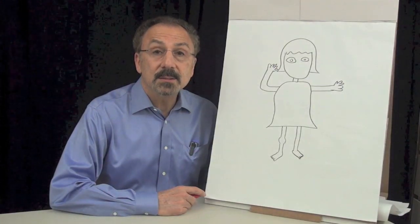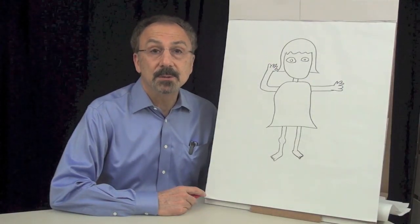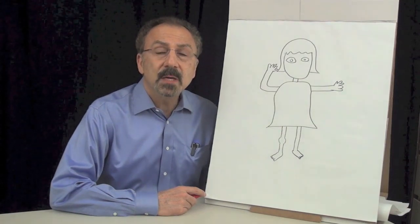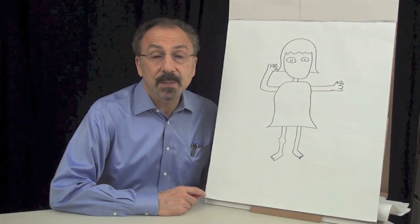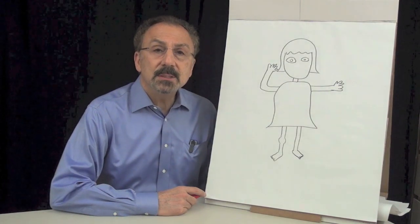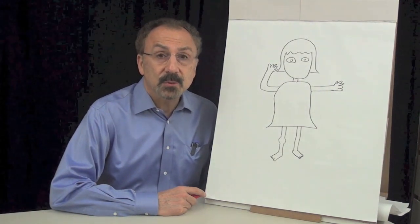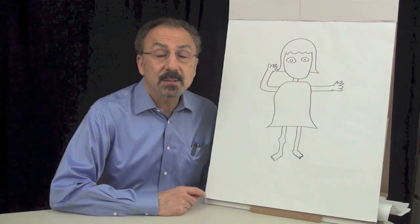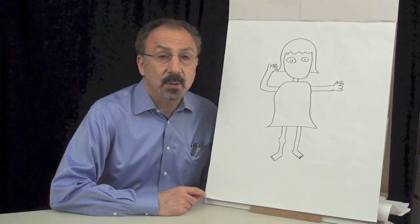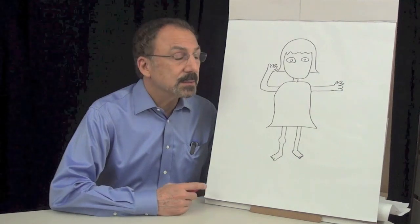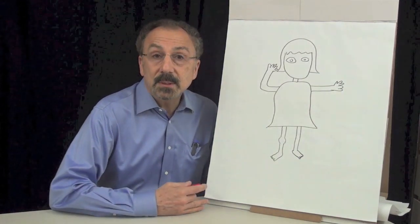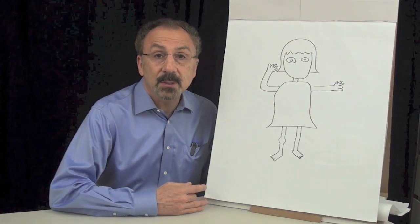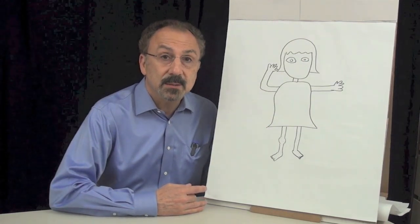Juvenile idiopathic arthritis is the new term for what used to be called juvenile rheumatoid arthritis. With good medical management by pediatric rheumatologists, we rarely see the condition anymore, but it's important to bring this condition to the attention of healthcare providers because the diagnosis should be made early so medical management can be initiated early.